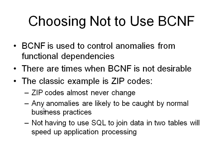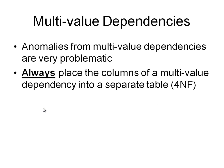We use the Boyce-Codd Normal Form (BCNF) to control irregularities generated from functional dependencies. There are times when normalization is not desirable, such as with tables containing zip codes that almost never change. In this case, anomalies are likely to be caught by normal business practice, so why break the data into tables and then write extra code to join it again? Instead, you can leave the data as is, which speeds up application processing. For multi-value dependencies, we use the Fourth Normal Form since they are very problematic and need to be placed into a separate table.